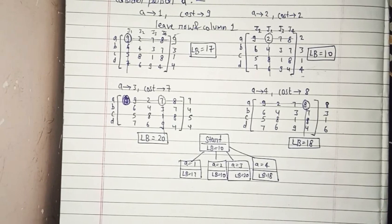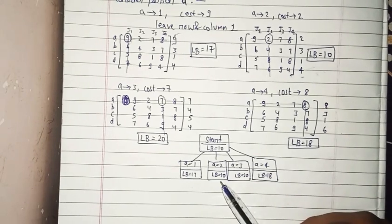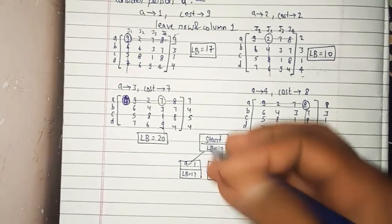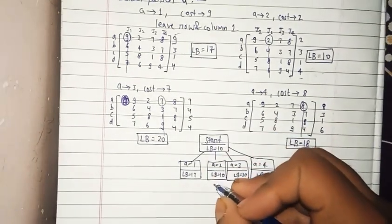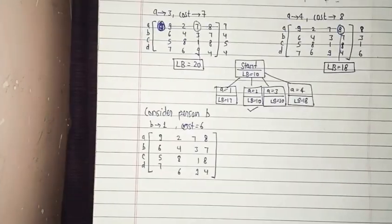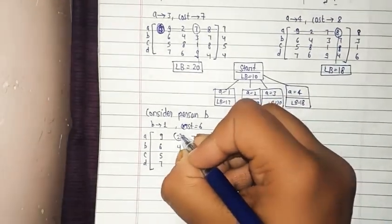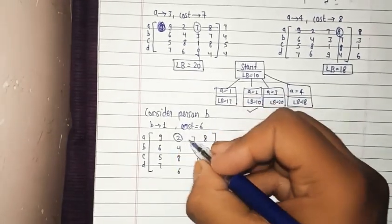The minimum lower bound among these is 10, corresponding to person A assigned to job 2. So we proceed with this branch. Now we do the same process considering person B. Since job 2 is fixed with person A, the circle on B's job 2 is kept.